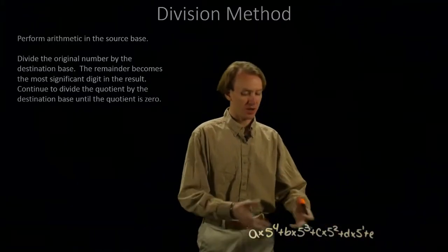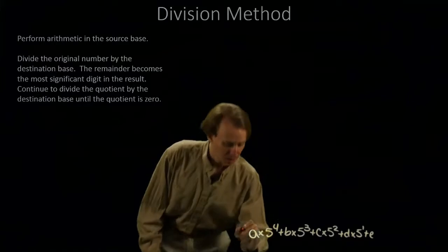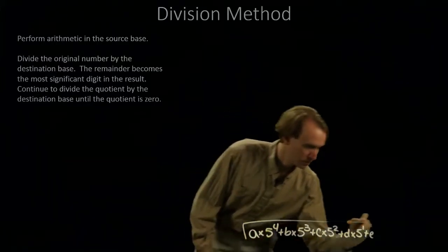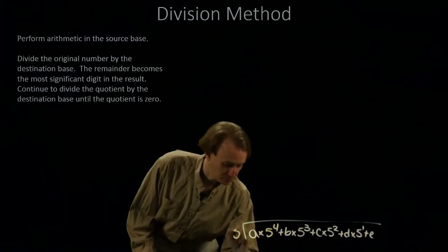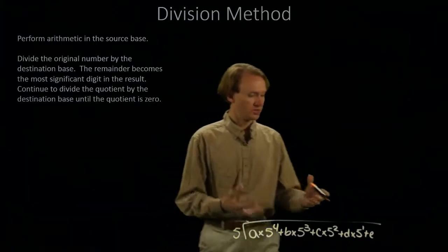So, perhaps I have this number compacted into decimal form, and I'm going to divide by my destination base, which in this case is 5. So, when I divide by 5,